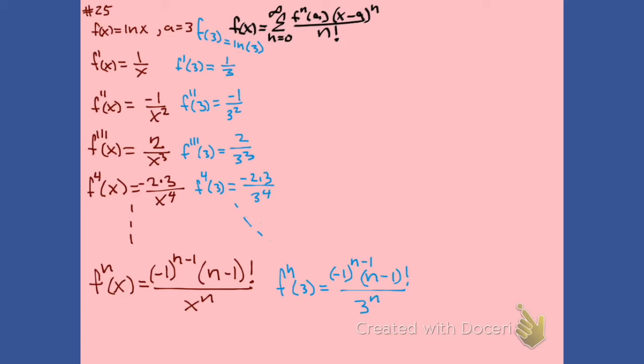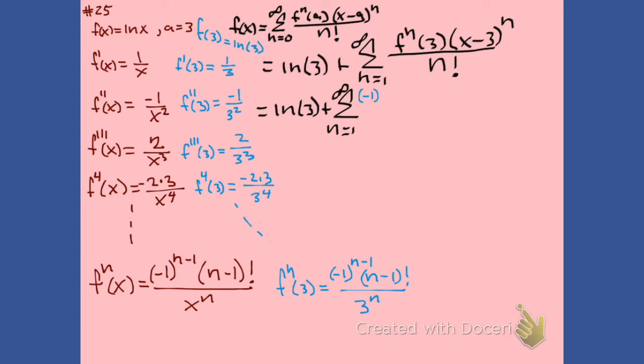So now we're going to make our Taylor series. But we noticed that our first term doesn't fit the form of our Nth derivative. So we're just going to leave it out there and start our series at one. I replaced threes everywhere where I saw an A. And now let's go ahead and put in our general term. I'll put it in blue.